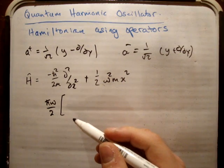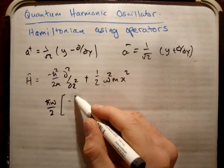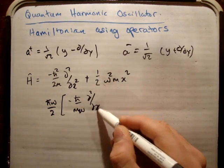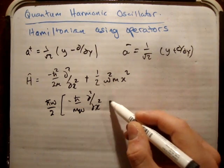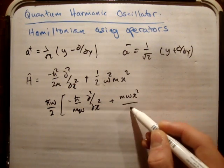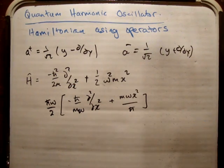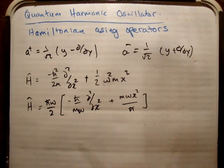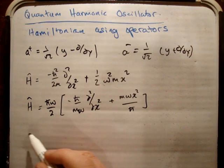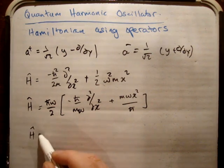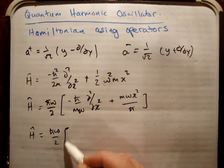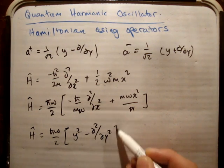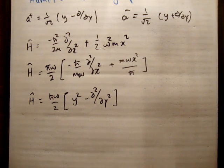So doing that you get something like: minus h-bar over m omega times d²/dx², plus m omega x squared over h-bar. Then we made a substitution, leaving this part equal to y squared and this part equal to d²/dy squared. And we get the final dimensionless Hamiltonian: y squared minus d²/dy squared.